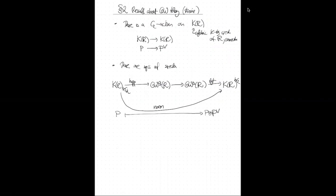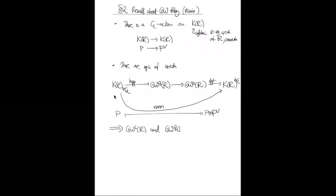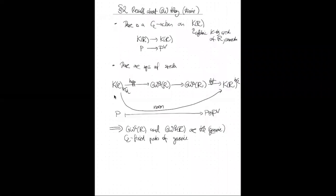There's a question about whether K(R) is viewed as a genuine C₂ spectrum. At this point I'm just talking about spectra with an action — nothing fancy. But one consequence is that GW^s(R) and GW^q(R) are actually the genuine C₂ fixed points of genuine C₂ equivariant refinements of K(R): one is called KR^s — the symmetric Hermitian K-theory — and the other KR^q — the quadratic Hermitian K-theory.